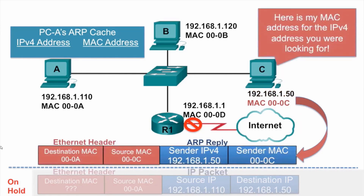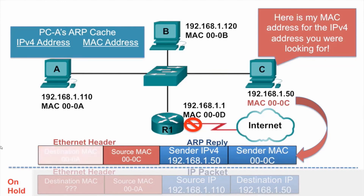The ARP reply includes its own IPv4 address and its own MAC address. It is sent to PCA. ARP replies are sent as a unicast, so the destination MAC address is that of PCA.